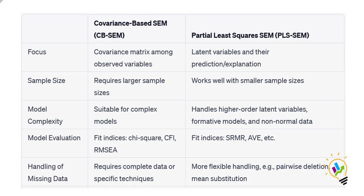PLS-SEM provides flexibility in modeling complex relationships and is more forgiving of deviations from multivariate normality assumptions. So when your data is not normally distributed, it is better to go with Smart PLS. But if you are dealing with complex relationships between observed variables, it is better to go with covariance-based SEM.